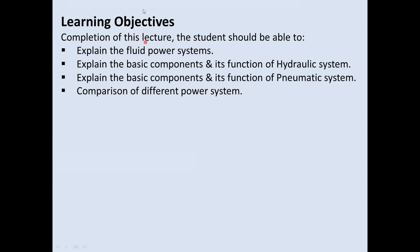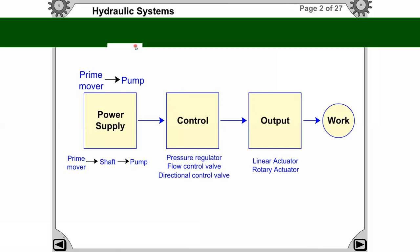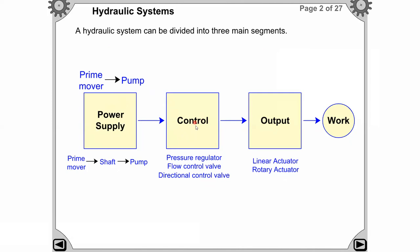First we will discuss hydraulic systems. The hydraulic system can be divided into three main segments: the first segment is the power supply, the second is the control segment, and the third is the output segment, after which we get the work done.